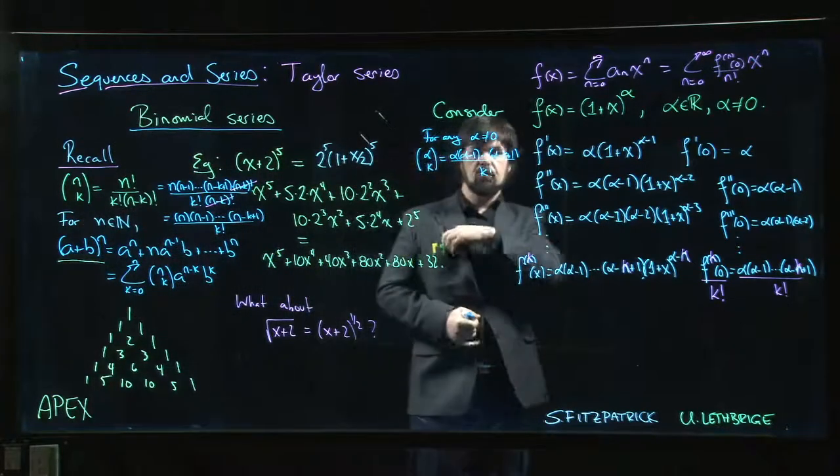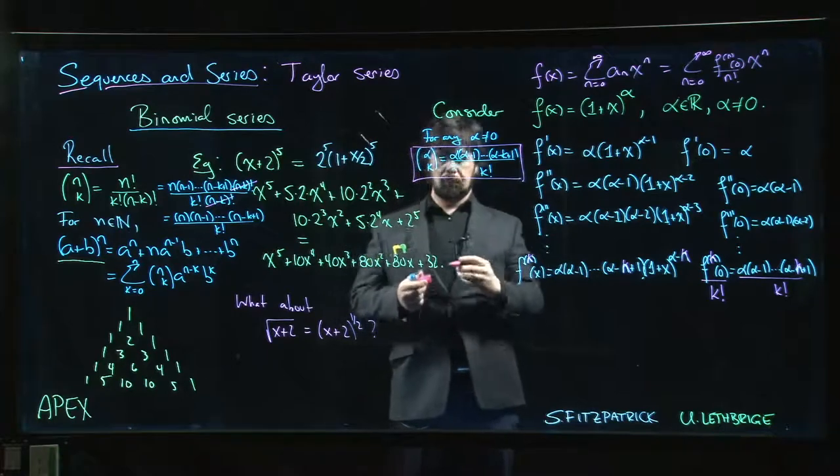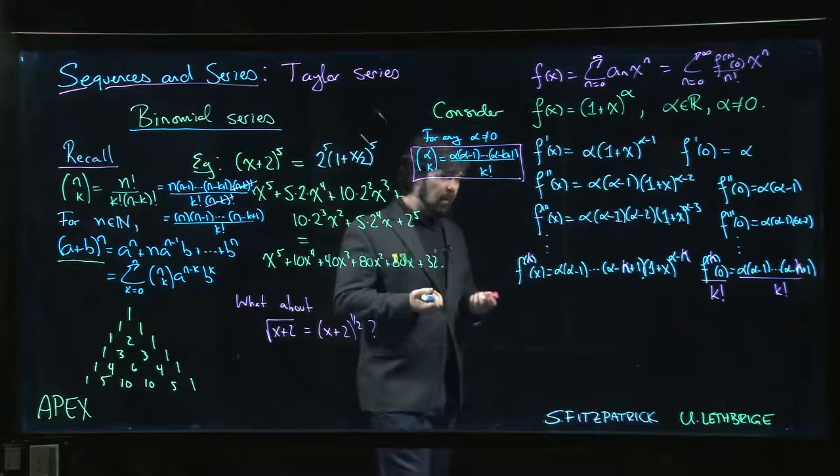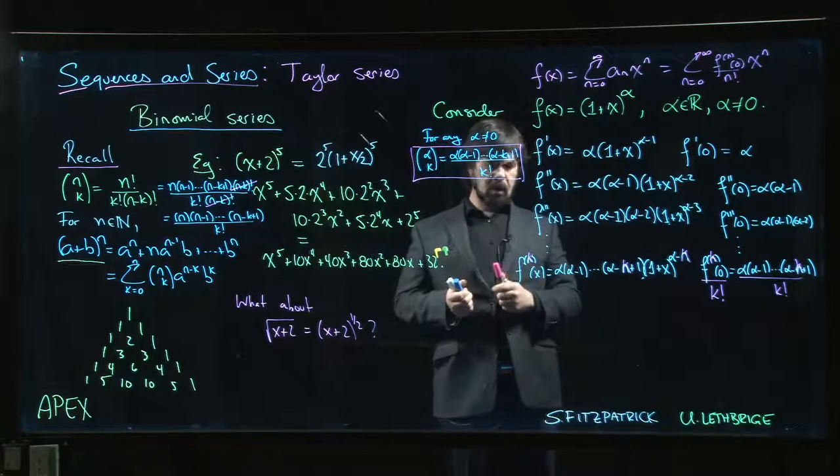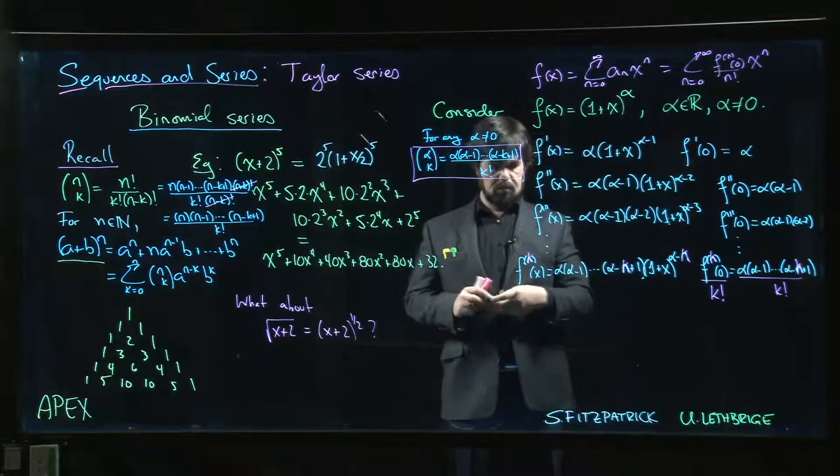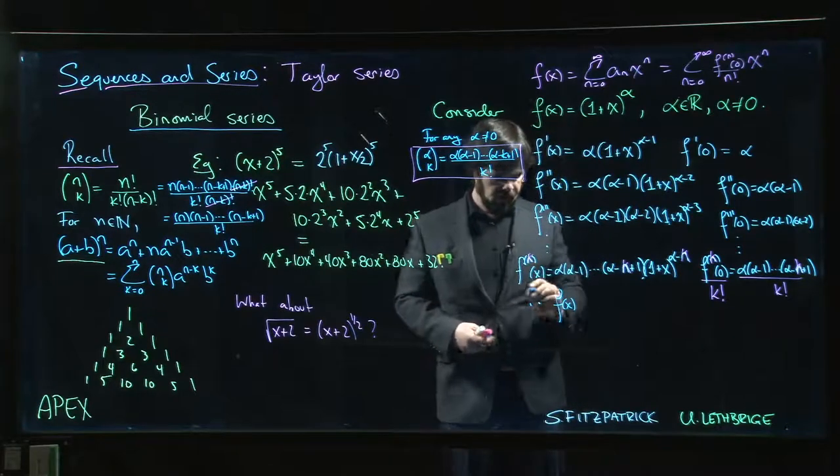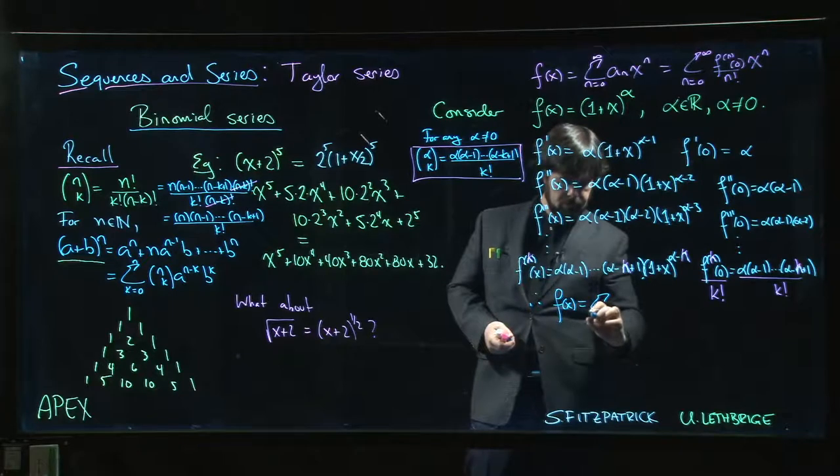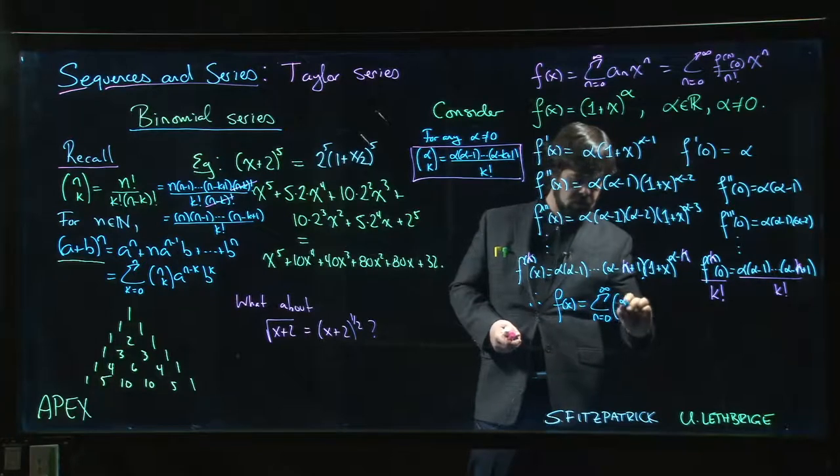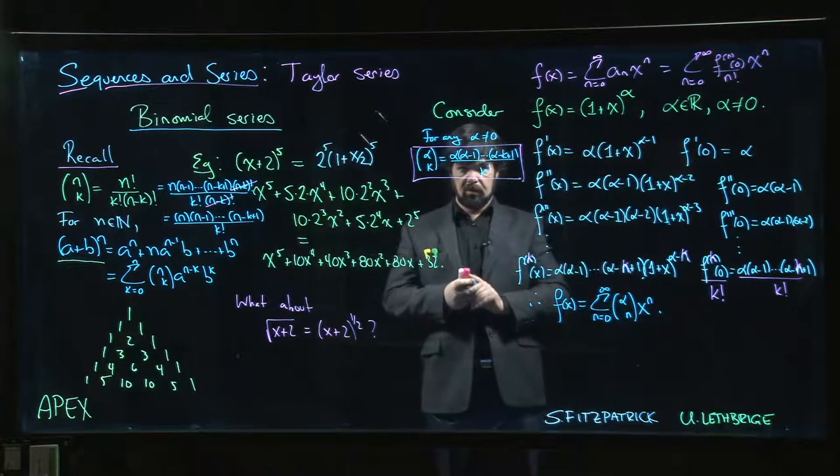So this is like a new and improved formula for the binomial coefficients. It still agrees with the old formula for the binomial coefficients, but it also works if alpha is a real number. We get any real number we want. So actually that means with this notation, we can write the following binomial series expansion: f of x equals sum from n equals 0 to infinity, alpha choose n, x to the n. That's our binomial series expansion.